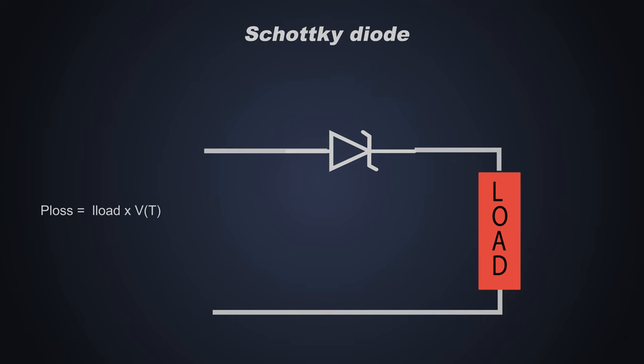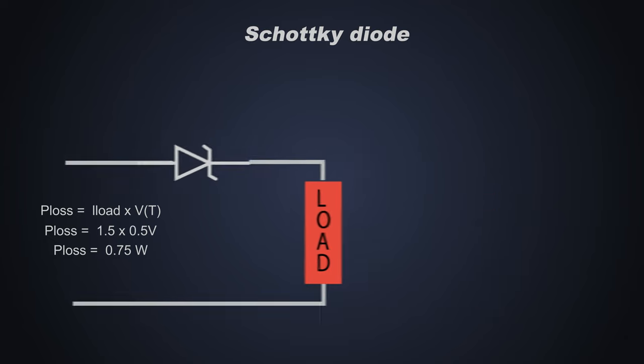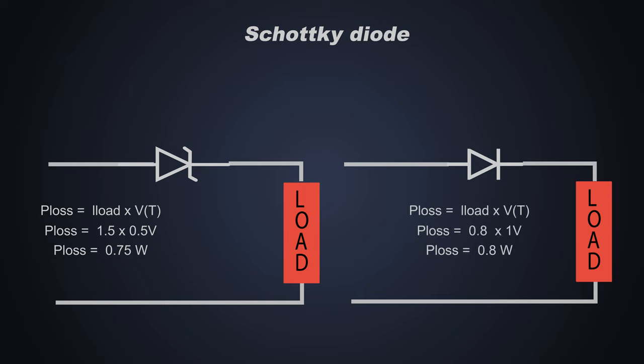The power loss of this diode can be calculated with the same formula. If the circuit current is 1.5A and VF of the diode is 0.5V, then conduction loss of this diode would be only 0.75W. Now when we see the difference between the rectifier diode and Schottky diode, even though the current across the Schottky diode is high, still the conduction loss across it is lesser than the rectifier diode.